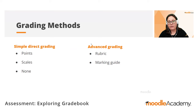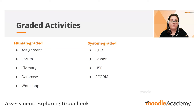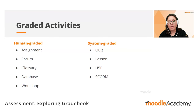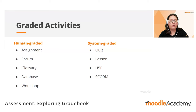When we use the advanced grading methods, we can also assess activities either by a grading rubric or a marking guide. Moodle has several activities that can be used for grading. There are activities that require human grading that need to be graded by the teacher — these are the assignment, the forum, the glossary, the database, and the workshop — and the automatically graded or system-graded activities like the quiz, the lesson, and H5P.